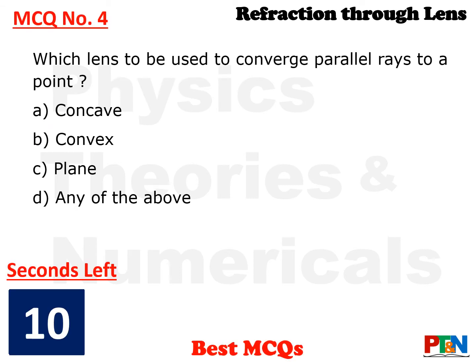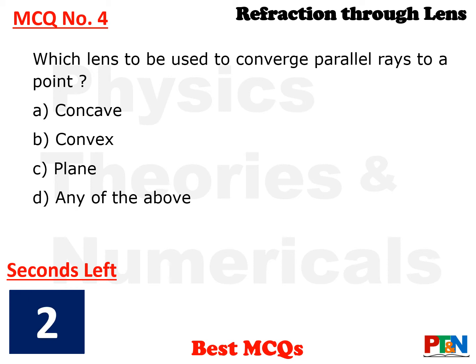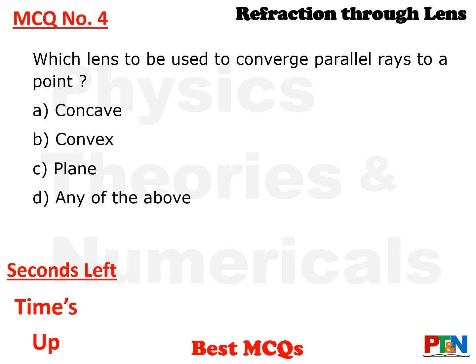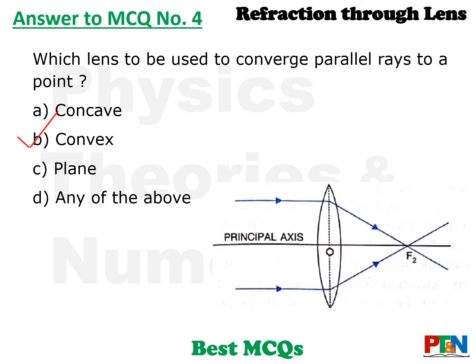Next MCQ. Which lens is to be used to converge parallel rays to a point? Options: concave, convex, plane, or any of the above. 10 seconds time. Time is up. The answer is again convex lens. A convex lens basically converts parallel rays to a point source.